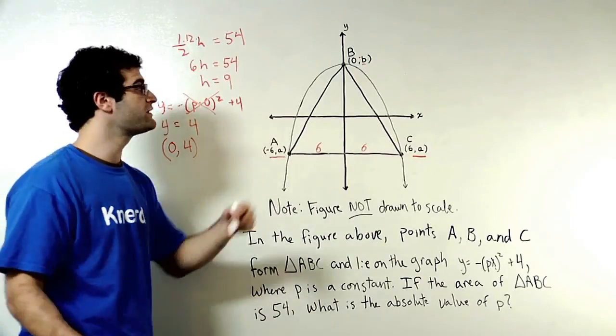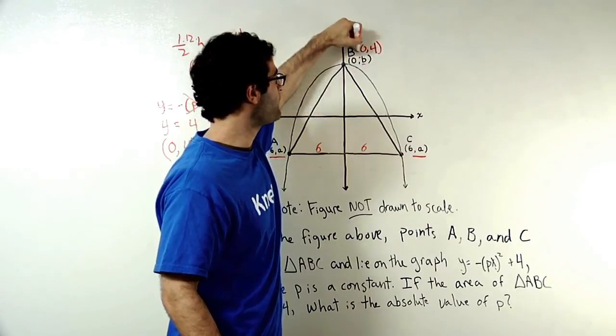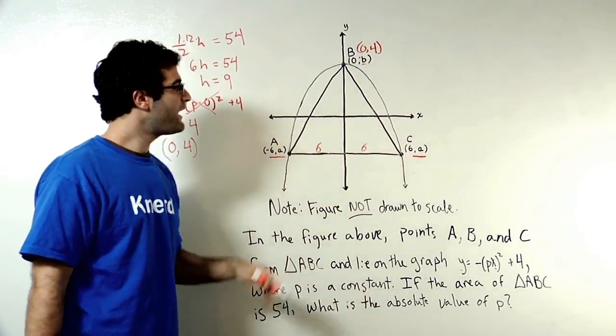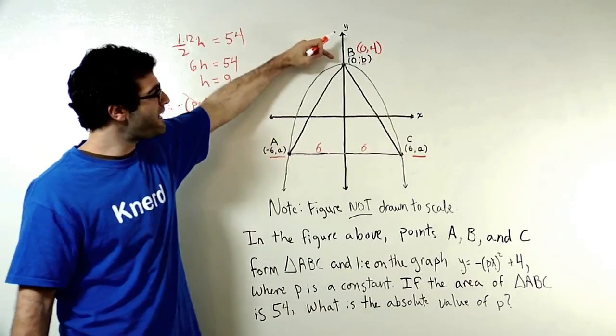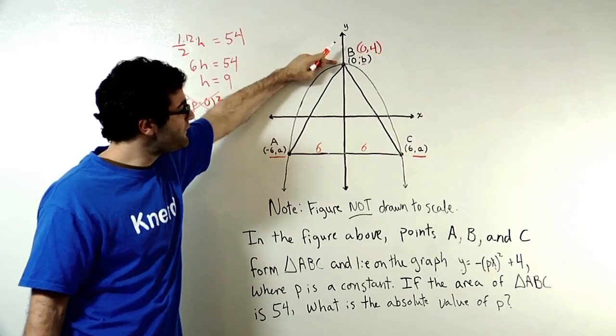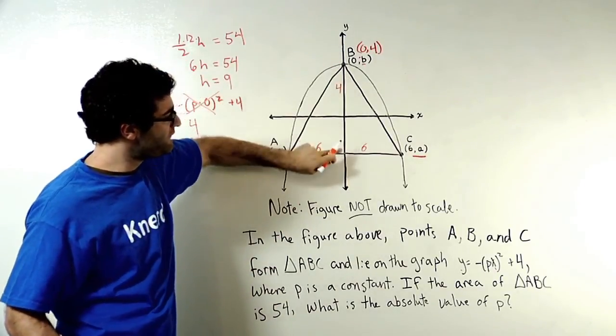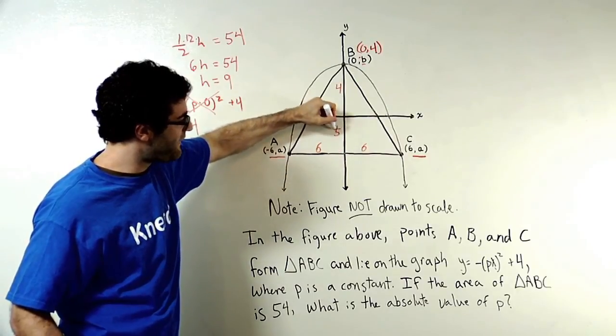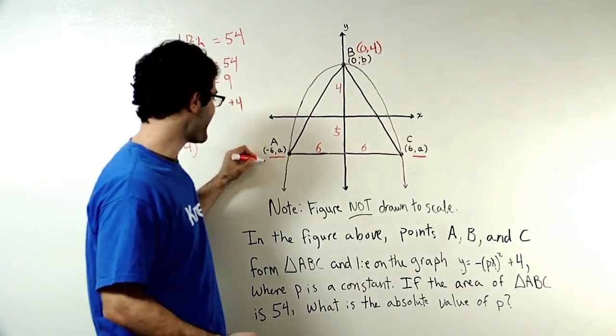Again, more information. The more information I get, the more information I can write down, and I'm making steps toward what I need to find. So now I know that the height of this triangle is 9, and I know that up here, the Y coordinate is 4. So I can figure out that if this is 4 above the X axis, and this has got to be a total of 9, I know that this has got to be 5 below the X axis, and now I have a value of my point A.